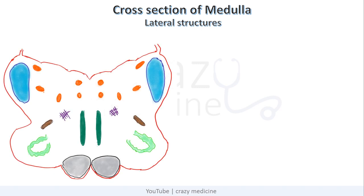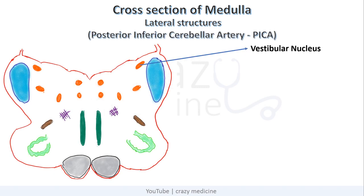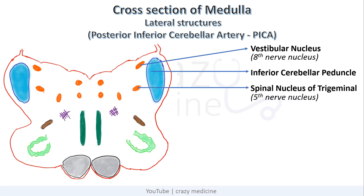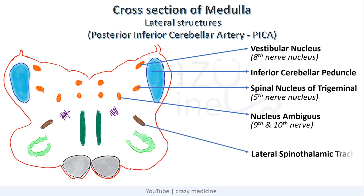Next is the cross-section of the medulla showing lateral structures, supplied by the posterior inferior cerebellar artery. First is the vestibular nucleus, which is the 8th cranial nerve nucleus. Next is the inferior cerebellar peduncle, which contains spinocerebellar tracts. Next is the spinal nucleus of the trigeminal nerve, the 5th cranial nerve nucleus. Next is the nucleus ambiguus, for the 9th and 10th cranial nerves, and the lateral spinothalamic tract, also known as the spinal lemniscus, which carries fibers for contralateral pain, touch, and temperature.